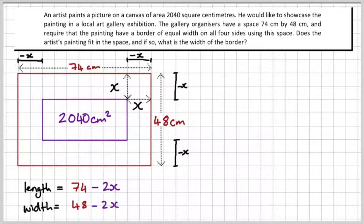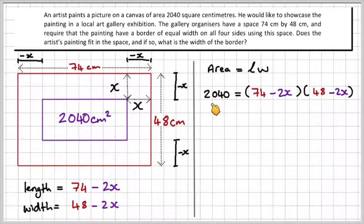Now just like part one, if you haven't seen part one, I'll link it in the cards above, we know the area is length times width. So we have an area of 2,040, and our length is 74 minus 2X, and the width is 48 minus 2X. So we're going to multiply these out.